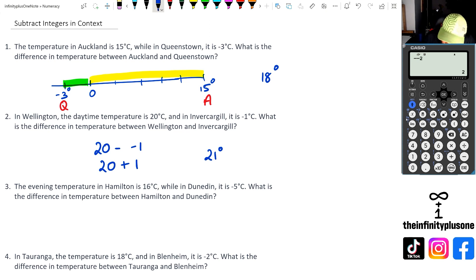Going to question three, what we've got is 16 degrees in Hamilton, and Dunedin has got minus 5 degrees. So once again, we've got 16 minus negative 5, which would be the same as 16 plus 5. So the answer for question number three is going to be 21 degrees.